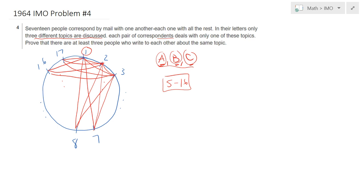So we would like to prove that there are at least 3 people who write to each other about the same topic. So I need to find 3 people, I, J, K, in a circle such that I and K are discussing a topic, I and J are discussing the same topic, and J and K are all discussing the same topic. So for instance they are all discussing topic A or topic B or topic C.